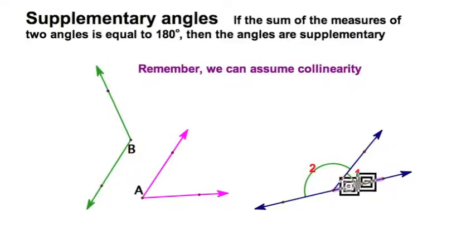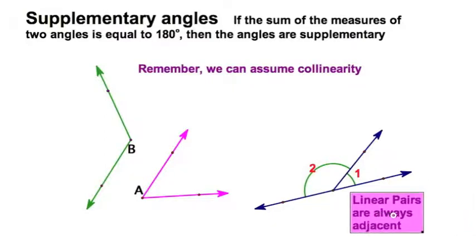And they have one pair of opposite rays. These, that is angles one and two, have a special name: those are a linear pair. So linear pairs always are adjacent, sharing a ray, and they are also supplementary angles. However, supplementary angles do not have to be linear pairs.